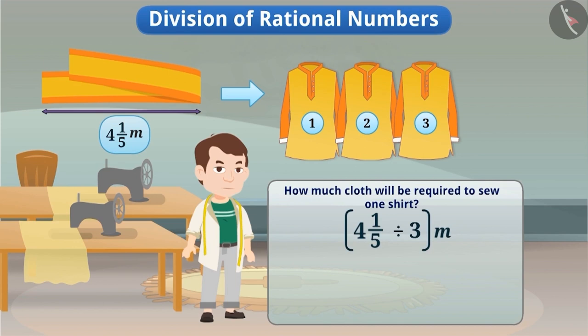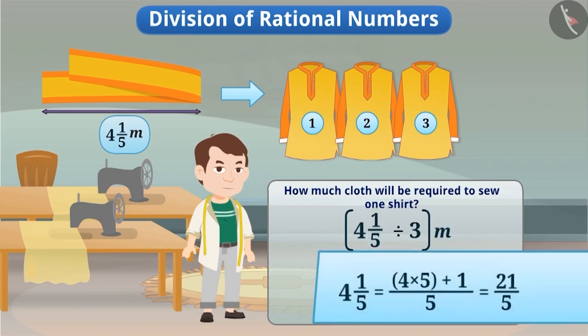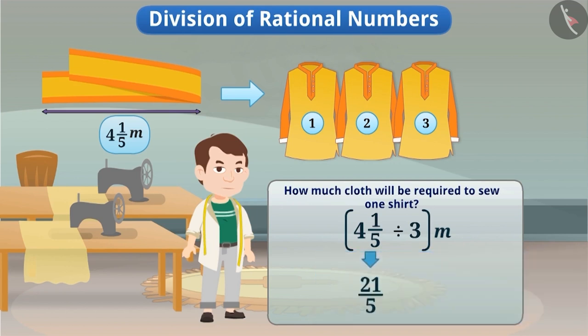We can express four and one-fifth as twenty-one by five. Now, we will divide twenty-one by five by three.